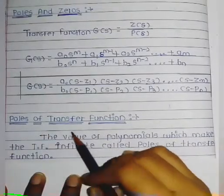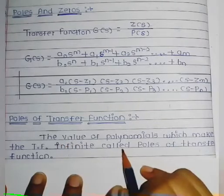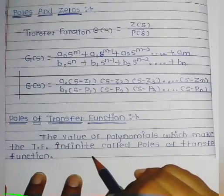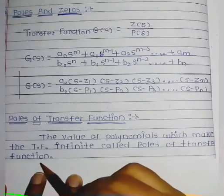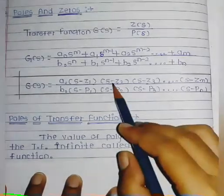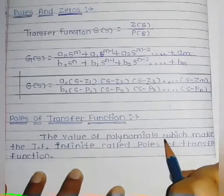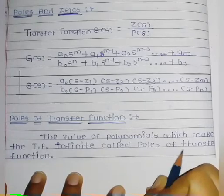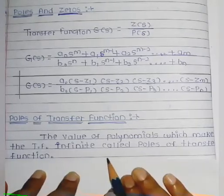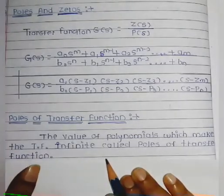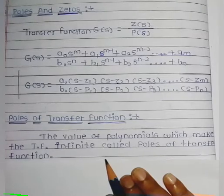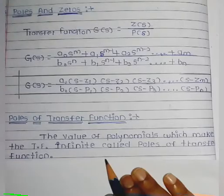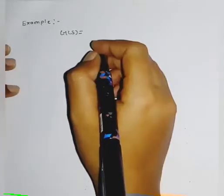The definition of poles of a transfer function: the values of the polynomial which make the transfer function infinite are called poles of the transfer function. We will see one example which comes in the exam — define poles of a transfer function with an example.